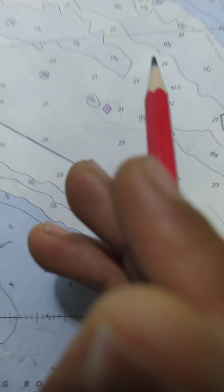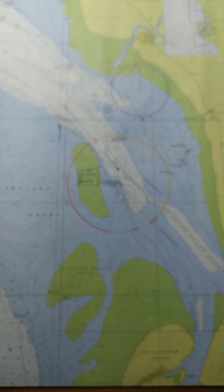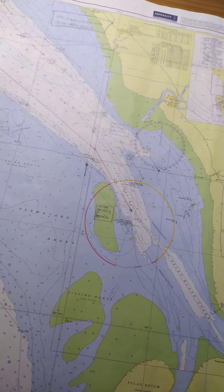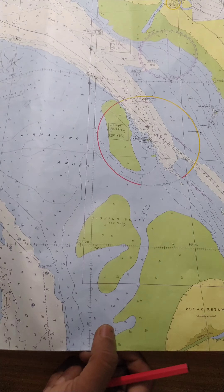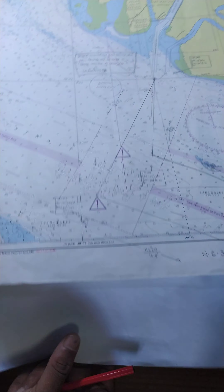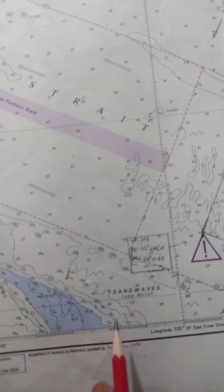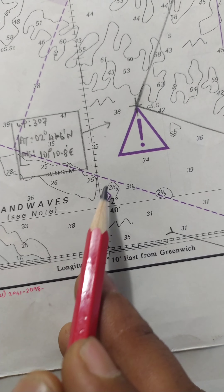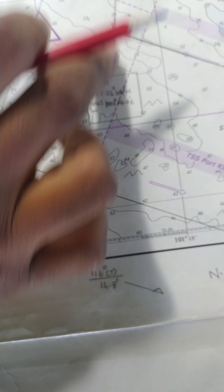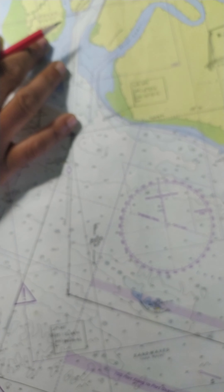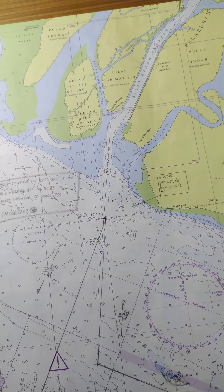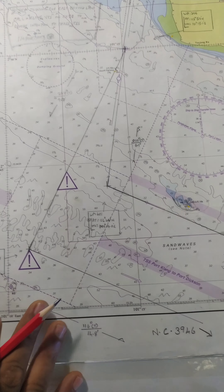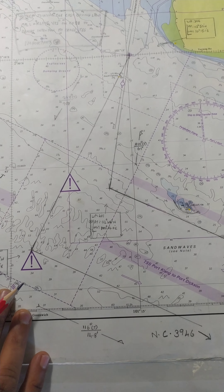This box is basically a much easier way of calculating tidal stream. The tidal stream is the flow of the water, and it depends on the high water at a place. The box gives the hours before high water and after high water, the high water time, and the direction of flow.